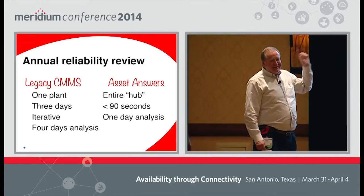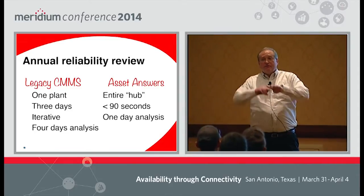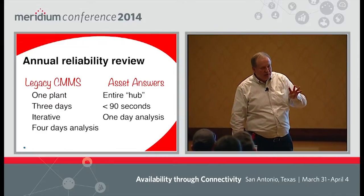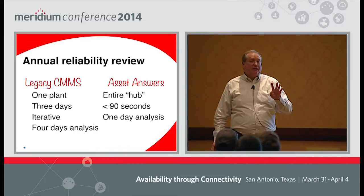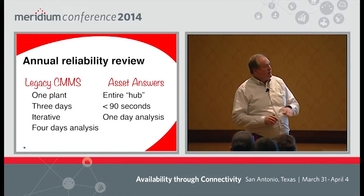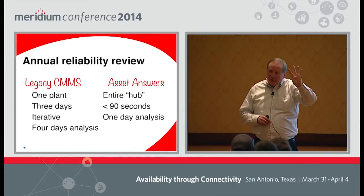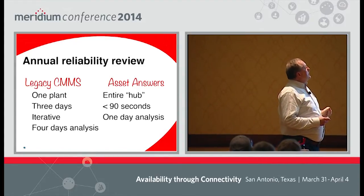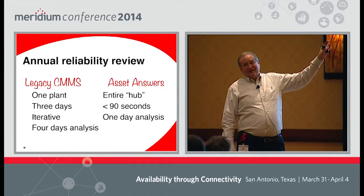I tried something. I looked at an entire what we call a hub, which in this case is four plants — geographically dispersed but in the same general geographic area. Four plants. I hazard to guess there may have been as many as 20 or 25 production units in it, versus over here at one production unit at one site. I got all that data in less than 90 seconds.